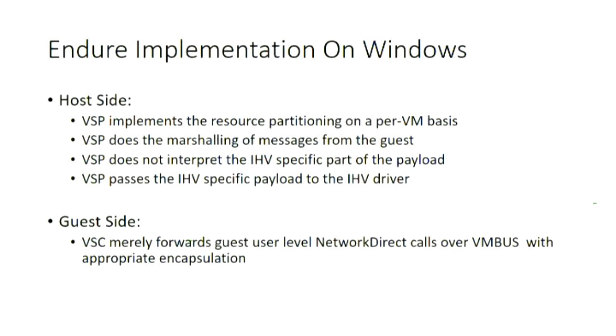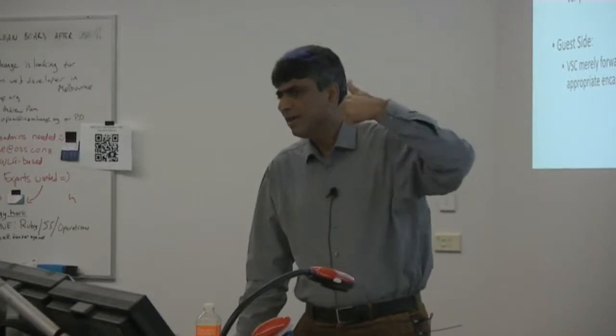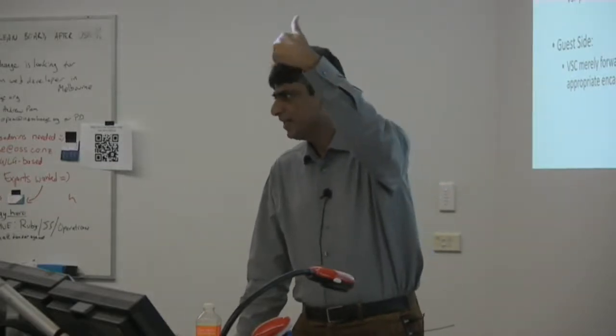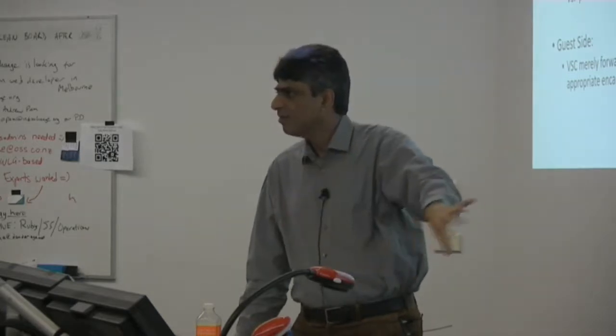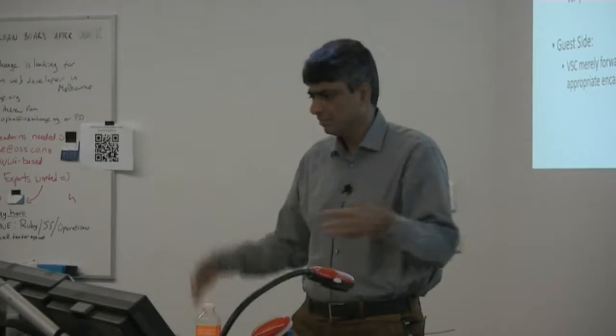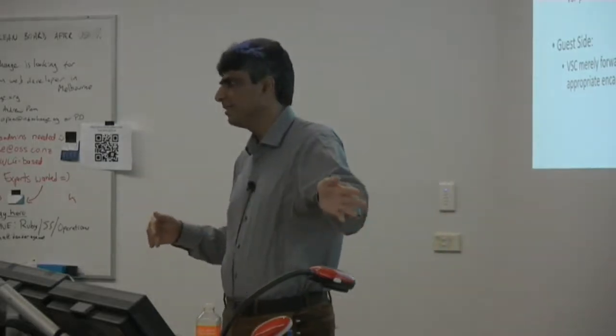So, on the host side, VSP implements the resource partitioning on a per-VM basis. So, up front, it decides how it's going to divvy up all of the NIC resources across the various VMs that might run on that node. And, VSP does the marshaling of messages coming from the guest and handing it over to the driver, the NIC driver and the host. That's all the VSP does. On the VSC side, the guest side, all it did was it got network direct calls from the application running in the guest. It just forwarded that over to the host. Just pick it up and just send it in. It's all that it did.